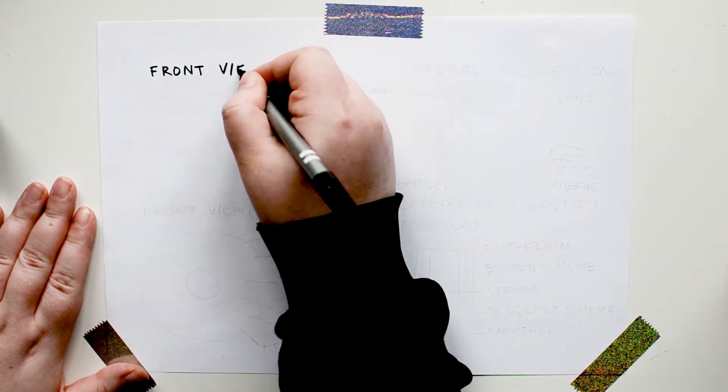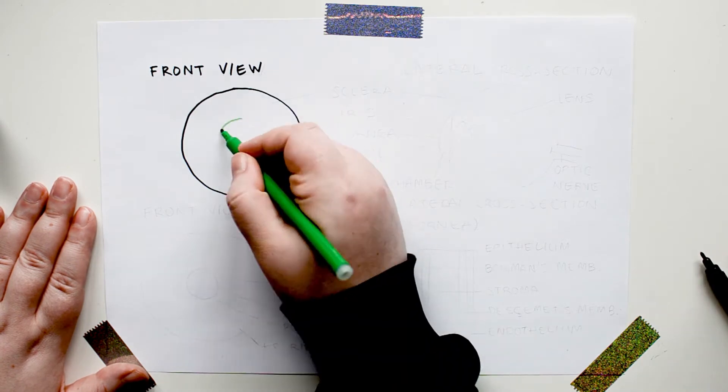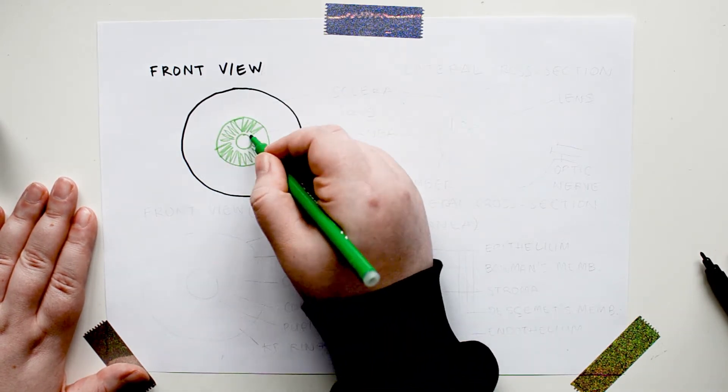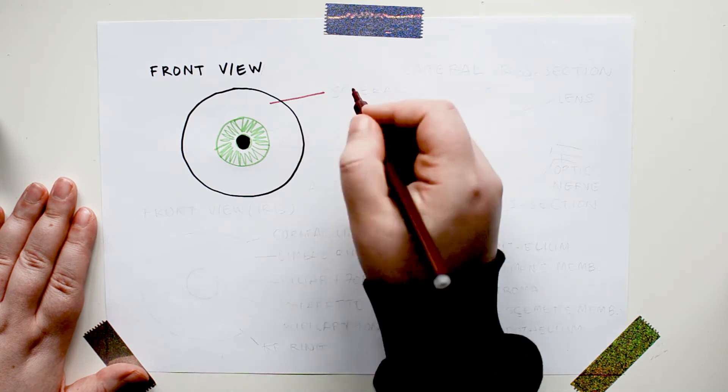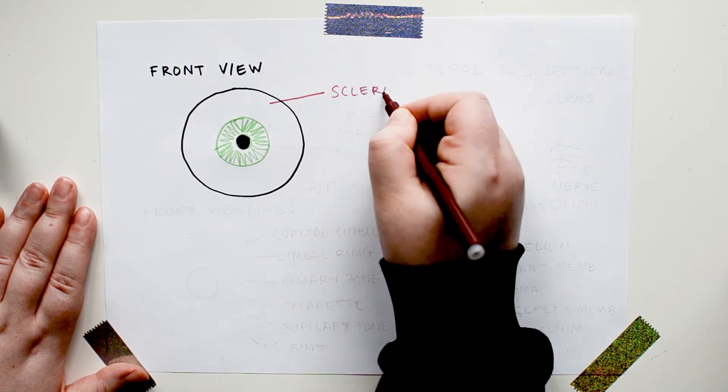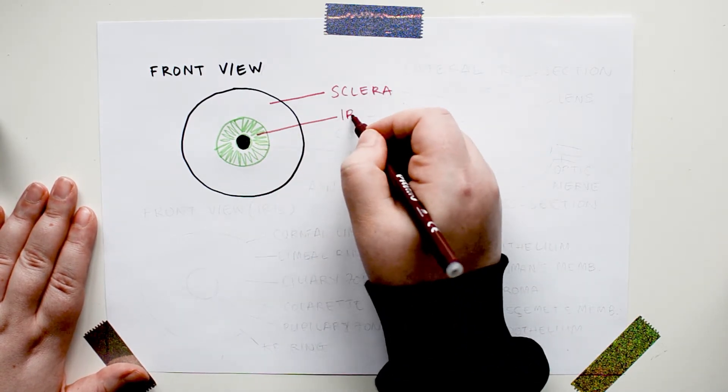So, here on the top left is a drawing I'm making of a human eyeball when we look at it from the front. The white part is the sclera, the colored part is the iris, and the black part in the middle is the pupil. I'm making the iris green, but it could be many other colors as well.